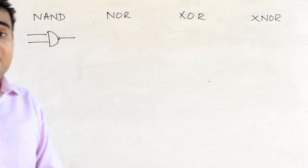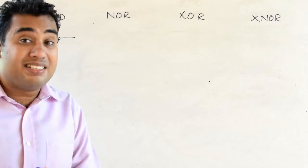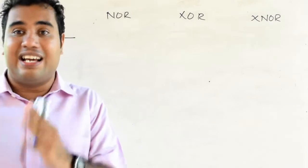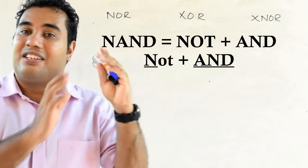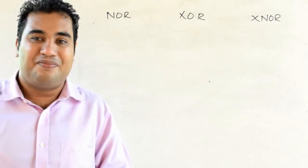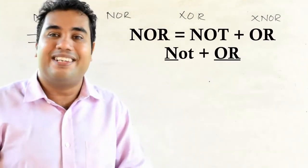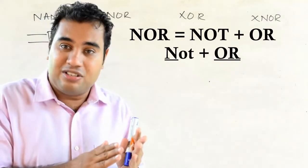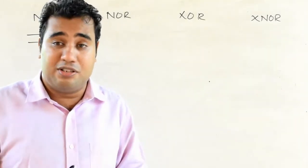The symbol of the NAND gate is almost similar to the AND gate, because it is the combination of two basic logic gates: NOT and AND — the name itself, NAND, shows 'NOT AND.' The NOR gate is composed of two gates: NOT and OR. The symbol of the NOR gate is also almost similar to the OR gate.